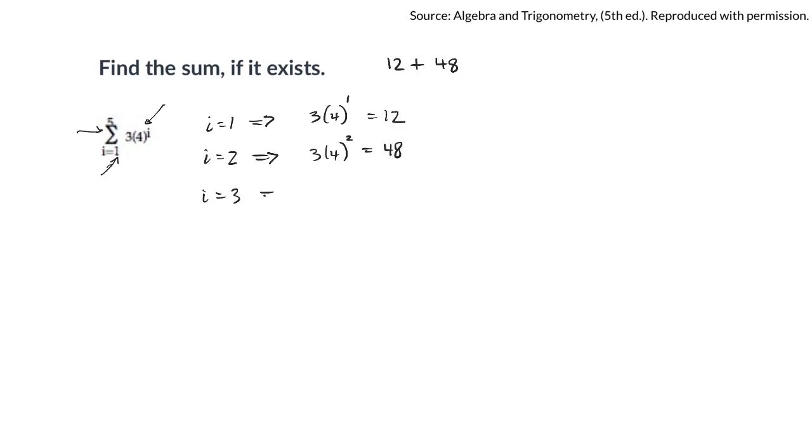Okay. Let's do i equals 3. 3 times 4 cubed. 4 cubed, 4 squared is 64 times 3 is 192. This is 192.